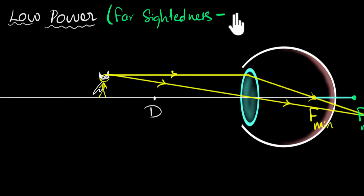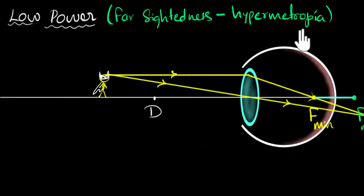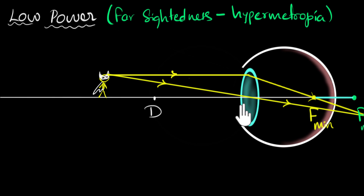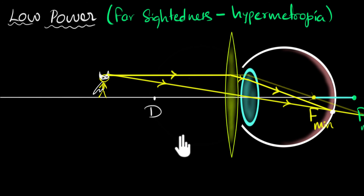The biological term for far-sightedness is hypermetropia. This time our eyes have lower than usual power, which means we need to increase the converging power — we have to use a converging lens. A convex lens of suitable focal length helps converge the beam of light back onto the retina, and that's how we solve the problem of far-sightedness.